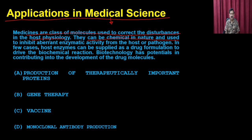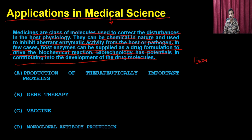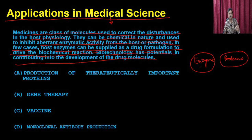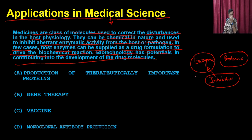Medicines can be chemical in nature and used to inhibit aberrant enzymatic activity from the host or pathogen. In some cases, the host enzyme can be supplied as a drug formulation to drive biochemical reactions. Biotechnology has potential in contributing to the development of drug molecules. Recombinant DNA technology can provide enzymes and proteins for therapeutic applications, supply enzymes to address deficiencies, and also provide the chance of developing inhibitors to control enzyme-catalyzed reactions.